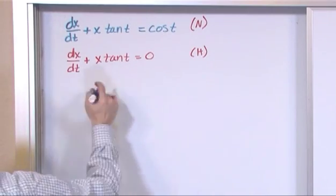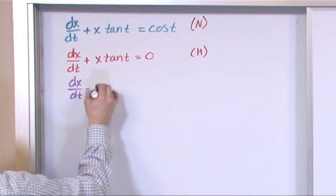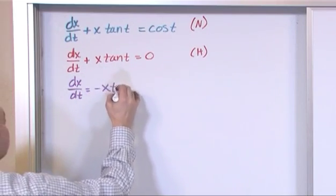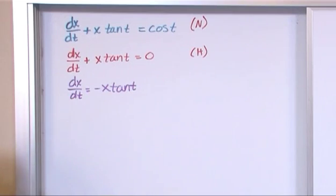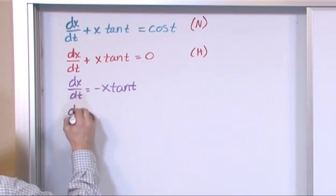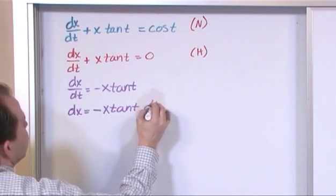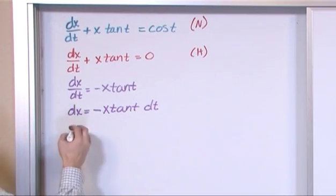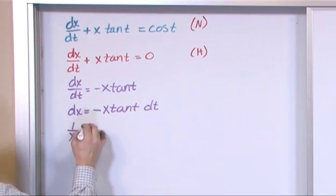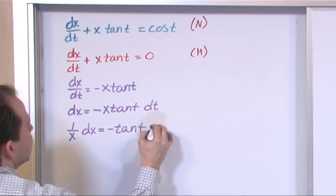So let's move this term over to the other side. dx/dt is equal to negative x times tangent of t. And then we'll continue separating by moving dt over, so we'll have dx is equal to negative x times tangent t dt, and then we'll move x over here to get 1 over x dx is equal to negative tangent t dt.